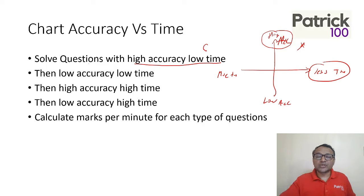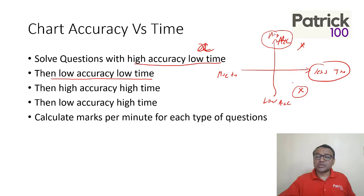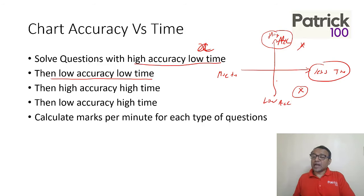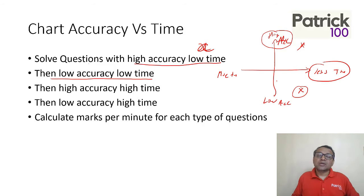See how many such questions there are — let's call them A questions. Then look at low accuracy, low time questions. Less time but low accuracy — these are the next preference. You would always prefer questions which take lesser time so you can attempt more questions in the examination. For example, fill in the blanks, analogies, or synonyms take lesser time than math questions.